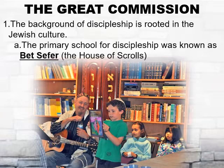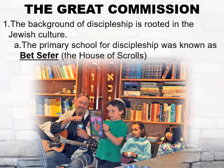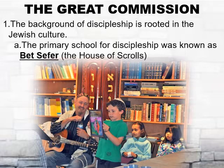When some Jewish boys or girls reached the age of six years old, they would begin their schooling in the temple or synagogue. This education would continue until he or she was twelve years of age. While at the House of Scrolls, or Bet-Sephir, the children would learn to read, study, and memorize the Pentateuch — the first five books of the Old Testament: Genesis, Exodus, Leviticus, Numbers, and Deuteronomy.